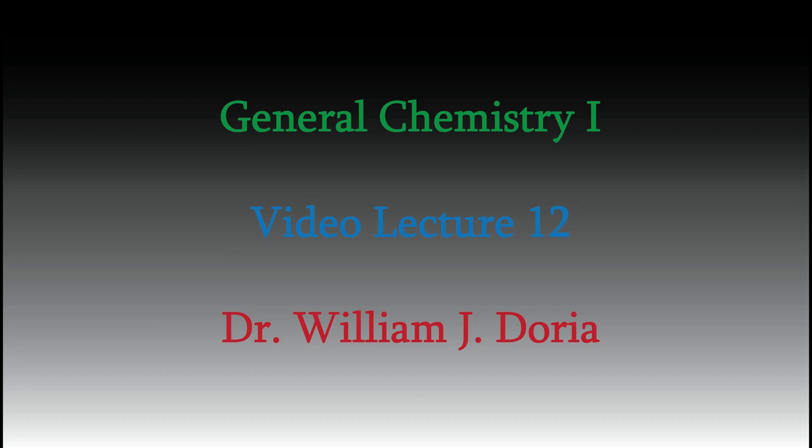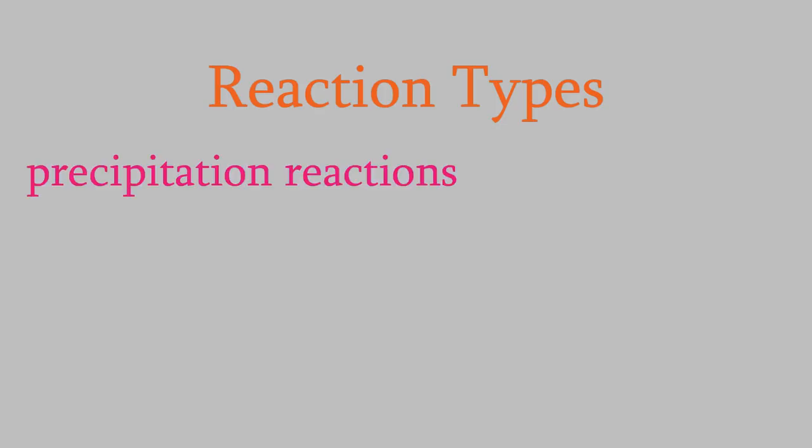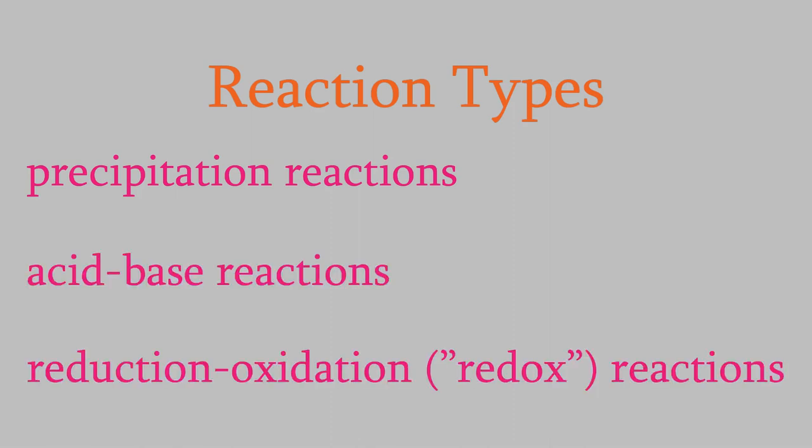Hi, and welcome back to my series of videos for General Chemistry 1. In the last video, I mentioned that there are three basic types of chemical reactions: precipitation reactions, acid-base reactions, and reduction-oxidation or redox reactions. Almost every chemical reaction belongs to one of these three categories, so if you understand them, you'll be able to understand a lot about all kinds of reactions in this course and every chemistry course you ever take.